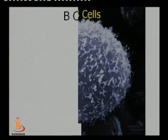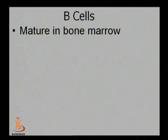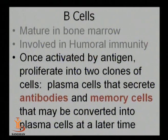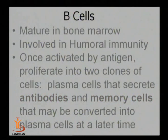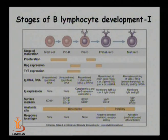B cells are the only cells synthesized and matured inside the bone marrow, and are the major component of antibody-mediated immune response. B cells are of two types: effector B cells and memory B cells. Effector B cells convert into plasma cells which release antibody, while resting cells convert into memory cells. All immunological cells are synthesized in bone marrow as hematopoietic stem cells.